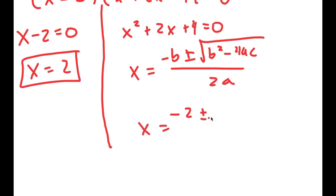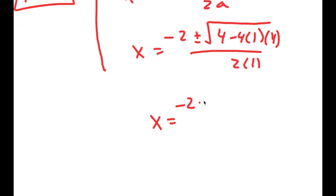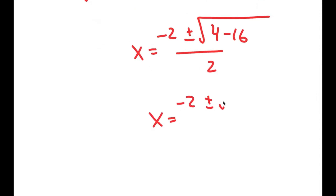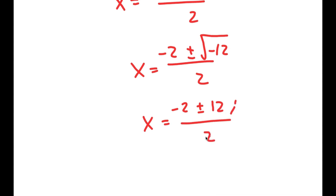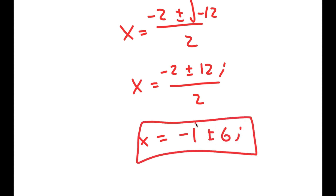Using the quadratic formula, I get negative 2 plus or minus the square root of 4 minus 4 times 1 times 4, all over 2 times 1. This turns into negative 2 plus or minus the square root of 4 minus 16 over 2, which is negative 2 plus or minus the square root of negative 12 over 2, which equals negative 2 plus or minus 2 times square root of 12i over 2, which simplifies to negative 1 plus or minus square root of 6i. So these are the two additional solutions to this equation.